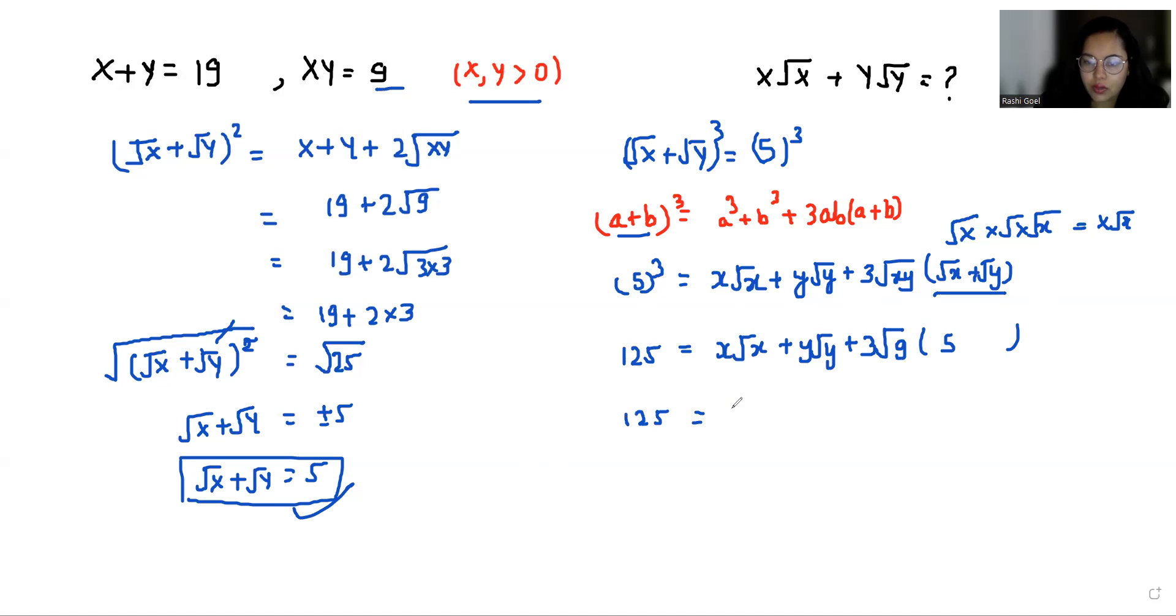So 125 equals x root x plus y root y plus 3 root 9 is 3, and 3 times 3 is 9, and 9 times 5 is 45.